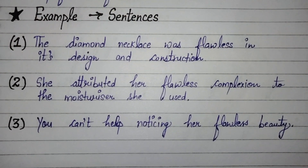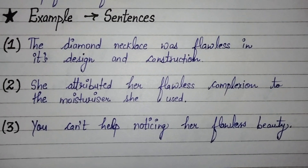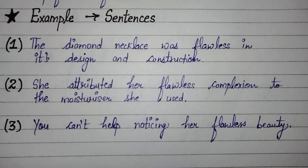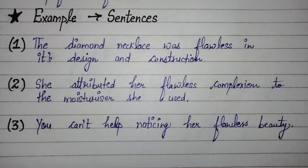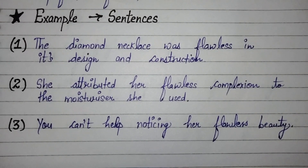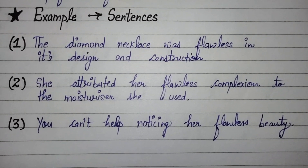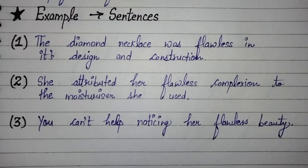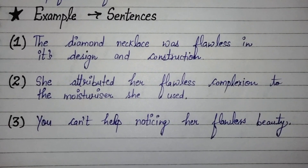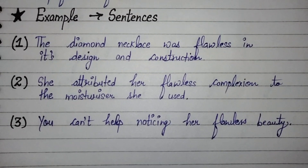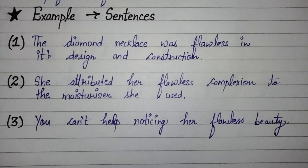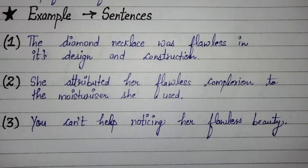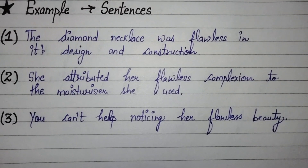Now, example sentences. First: the diamond necklace was flawless in its design and construction. Second: she attributed her flawless complexion to the moisturizer she used. Third: you can't help noticing her flawless beauty.